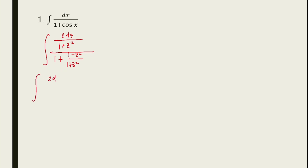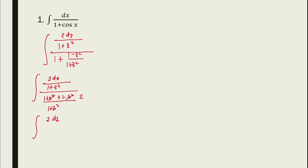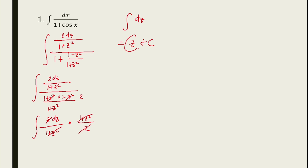We take the LCD, which is 1 plus z squared. So 1 plus the quantity 1 minus z squared over 1 plus z squared simplifies, and we cancel terms. Taking the reciprocal, we get 2 dz over 1 plus z squared times 1 plus z squared over 2. Everything cancels and the remaining is the integral of dz, which equals z plus C. Therefore, substituting back, z equals tan(x/2), so the answer is tan(x/2) plus C.